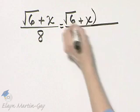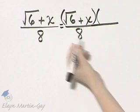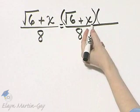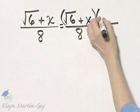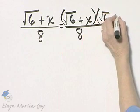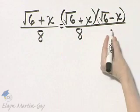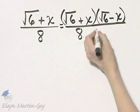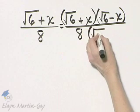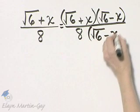So we will multiply by the conjugate. What's the conjugate of this square root of 6 plus x? It's square root of 6 minus x. If I multiply the numerator by this factor, I must multiply the denominator by that exact same factor also.